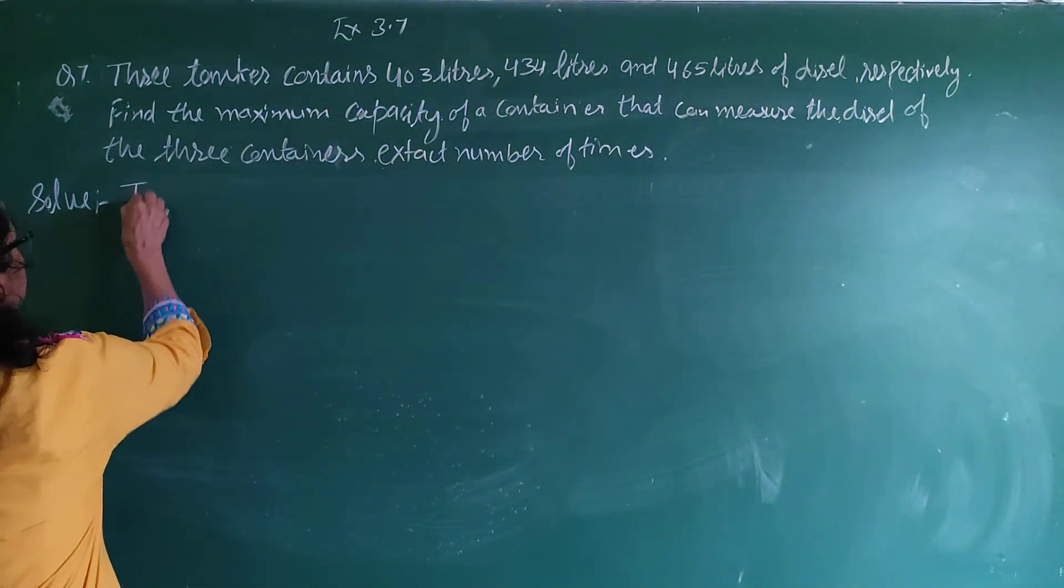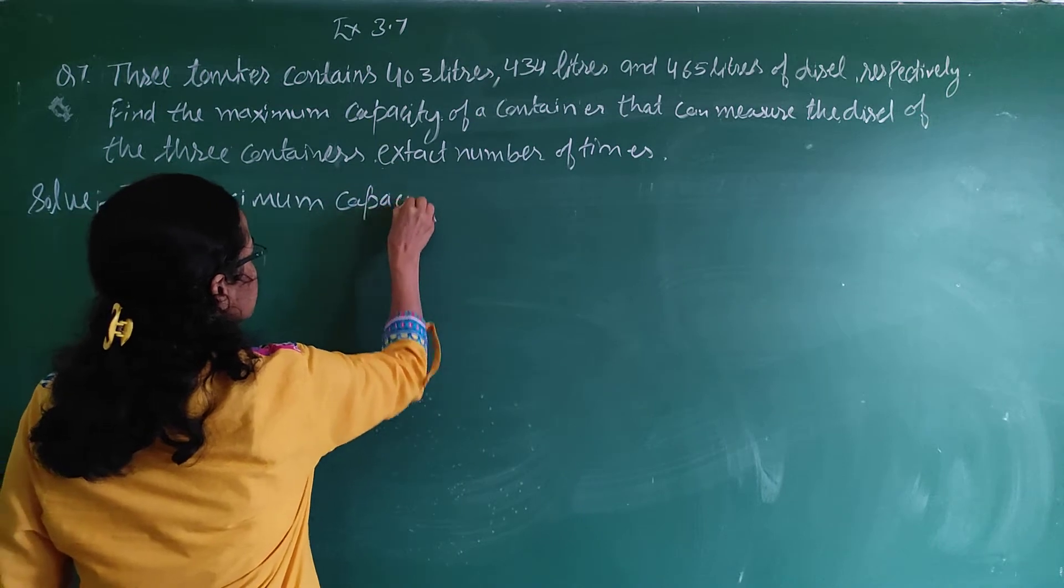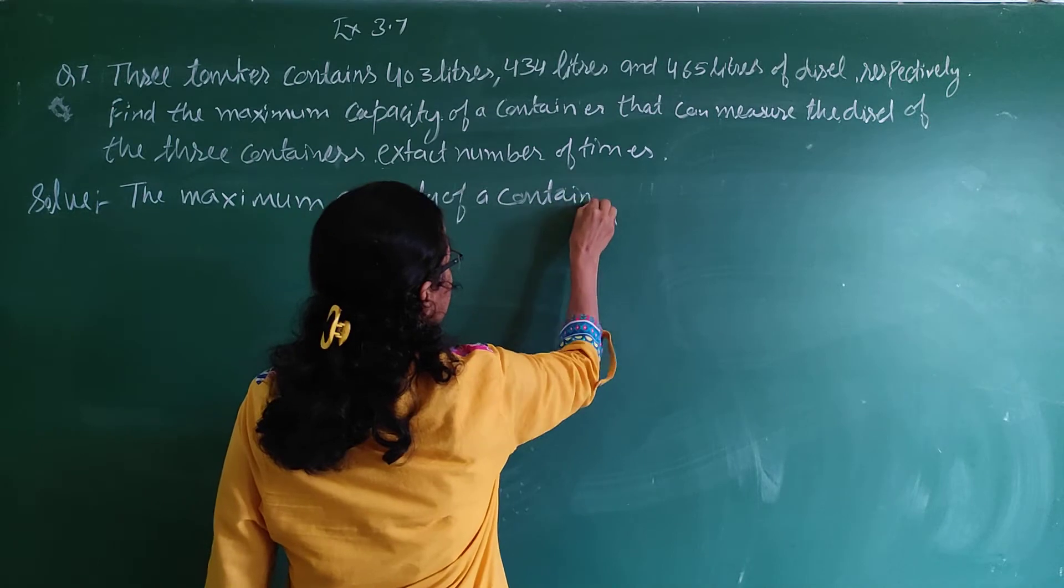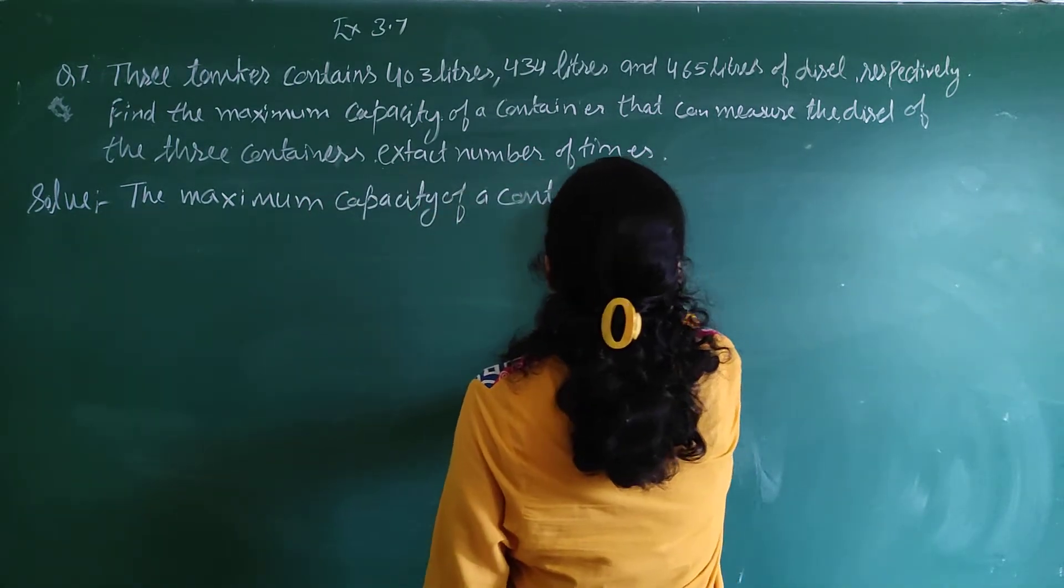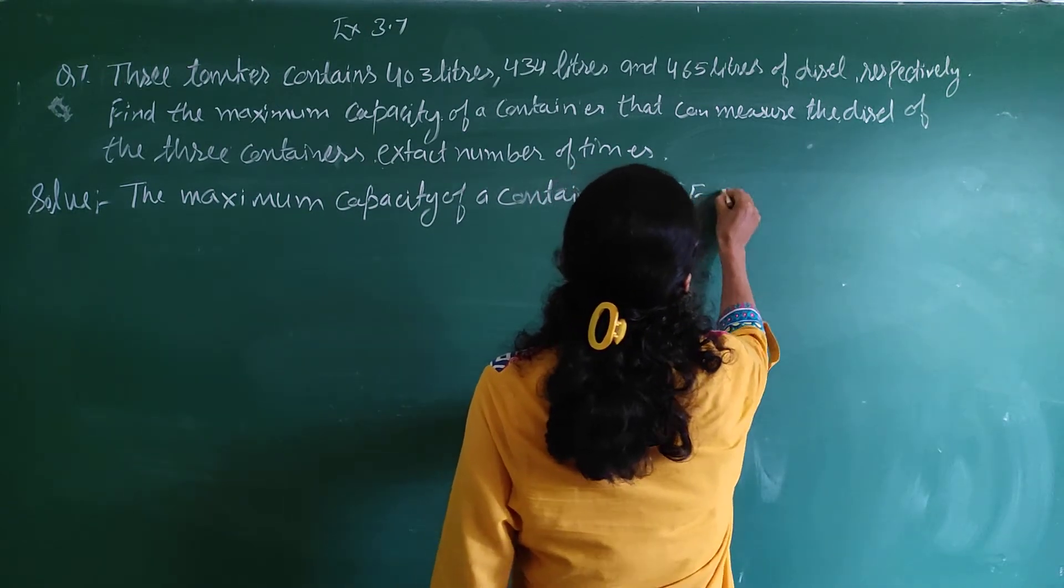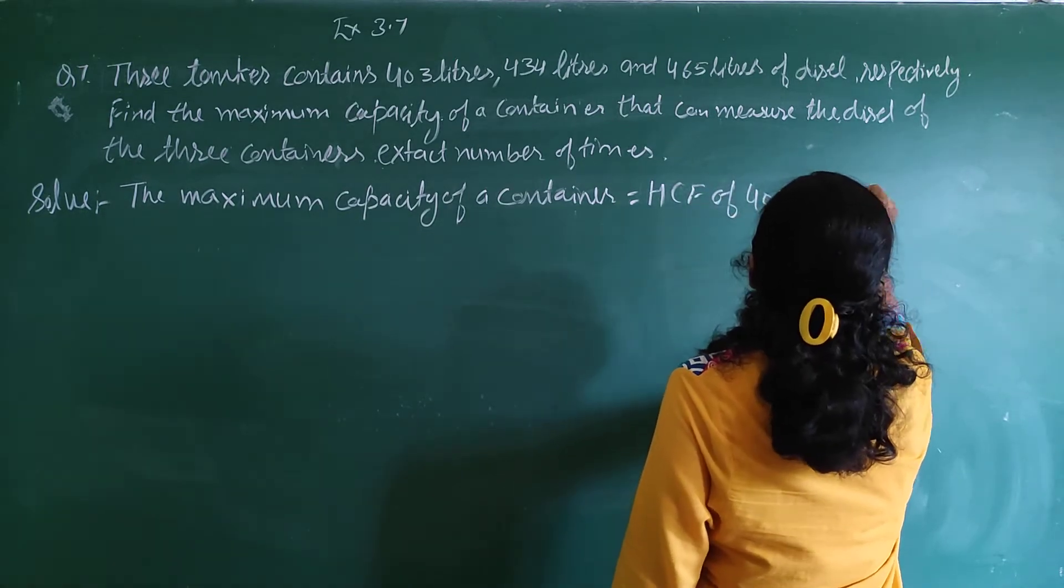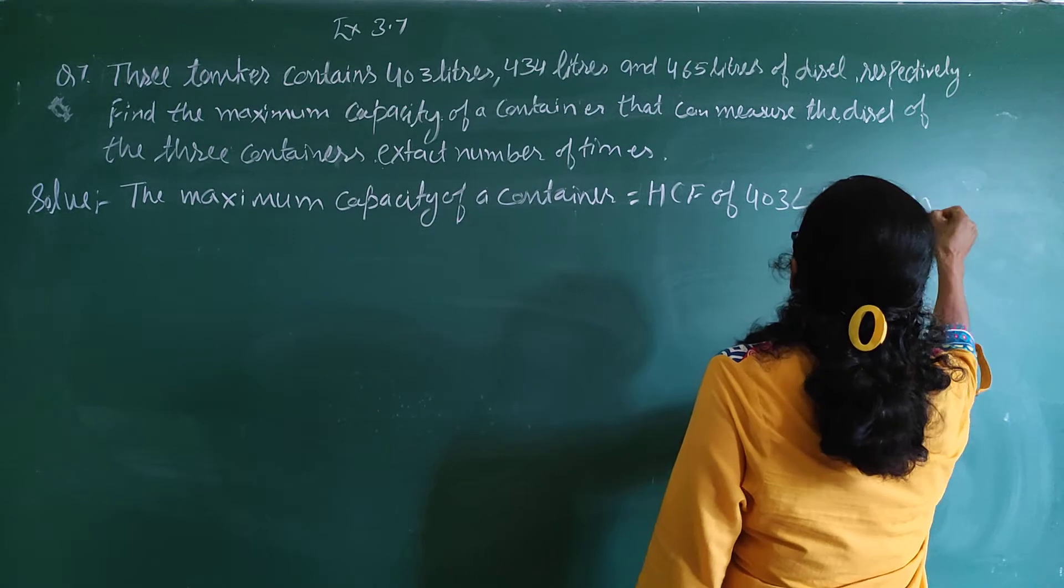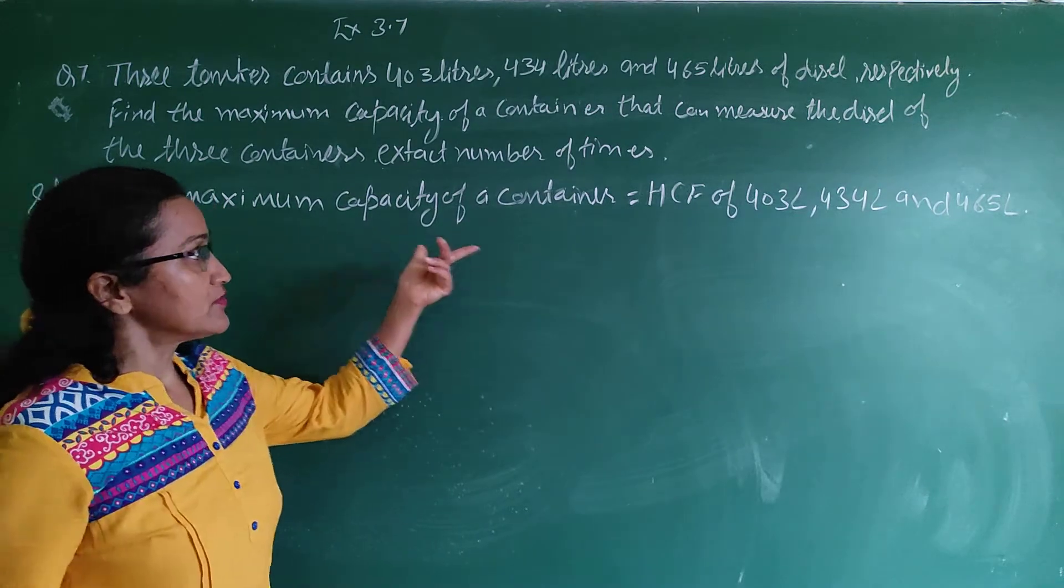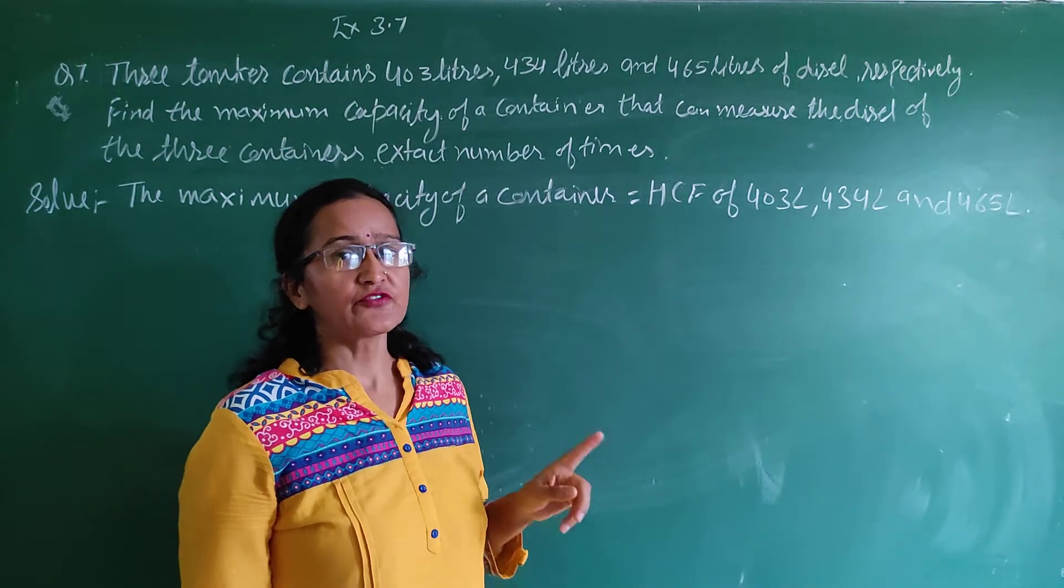So write here, the maximum capacity of a container, the maximum capacity, that is equal to HCF of 403 liter, 434 liter and 465 liter. Maximum capacity means you have to find the HCF, and in this question we have to find the HCF by division method.